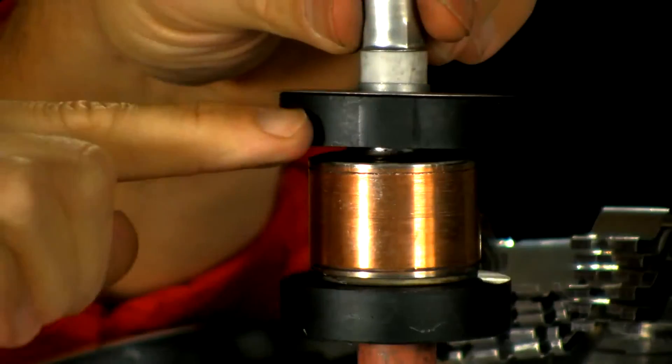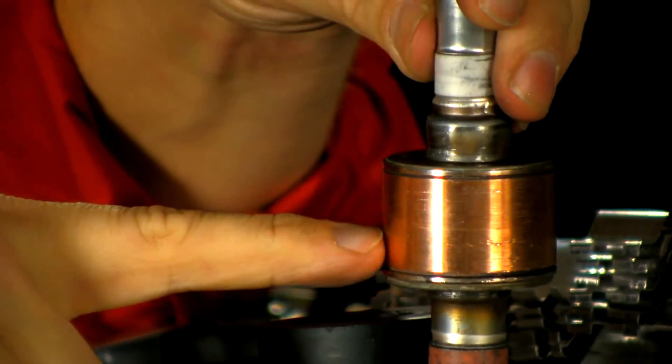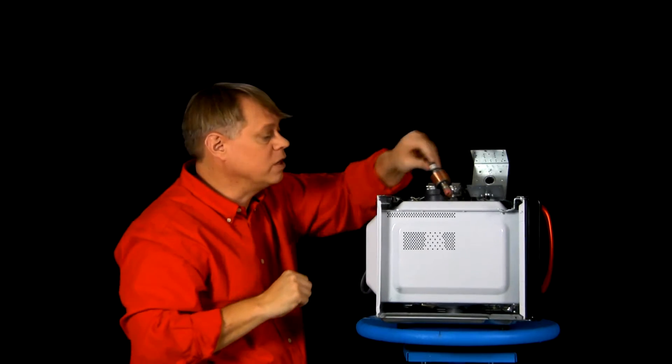The key parts are these two magnets and the vacuum tube. Now, I have another one so you can see the inside.